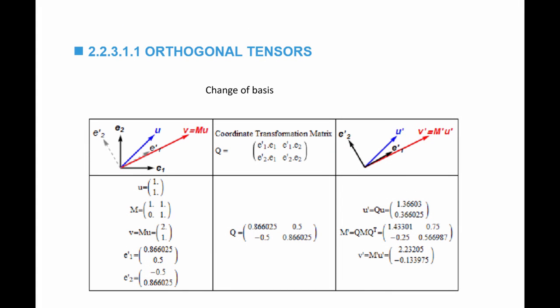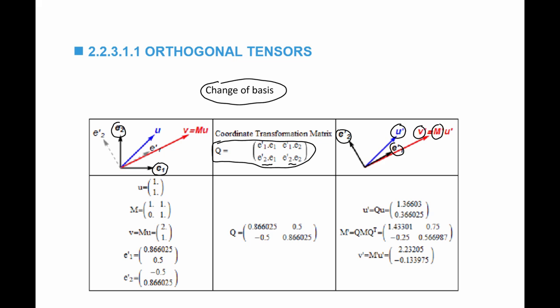The third function of orthogonal tensors is the change of basis, which we studied before. If I have an orthonormal basis set made out of e1 and e2, and a new orthonormal basis set e prime 1 and e prime 2, I can find the new coordinates of u prime, v prime, and m prime using an orthogonal tensor whose components are obtained by finding e prime 1 dot a1, e prime 1 dot a2, e prime 2 dot a1, and e prime 2 dot a2. So these are the three functions of orthogonal tensors.